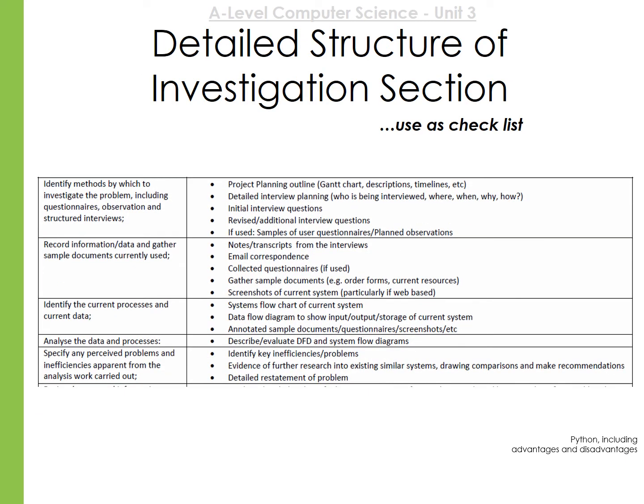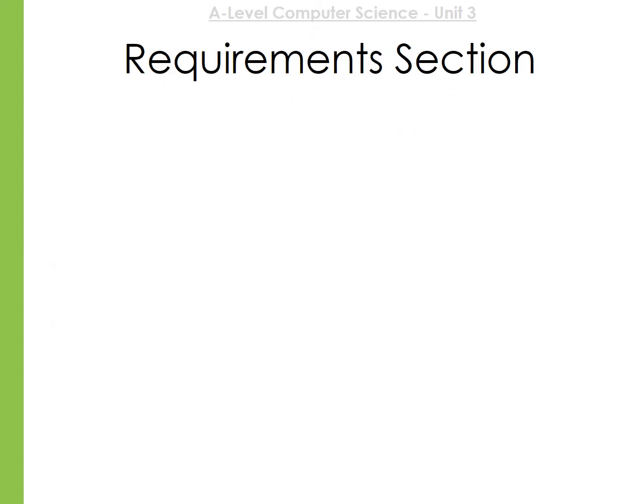There's a table to help with things you might include in this section. These could be: project planning guides such as Gantt charts and timelines; interview questions and reviews; observations; email correspondence; sample documents or screenshots of a current system; flow charts, data flow diagrams, and DFD diagrams showing inputs and outputs; annotated documents or questionnaires; descriptions of key problems or influences; and further research on current systems and their features. Make sure you've finished your investigation before you complete the requirements section.